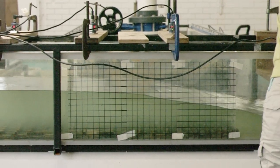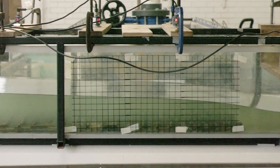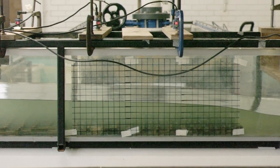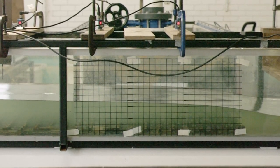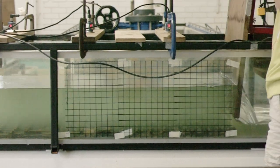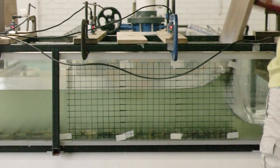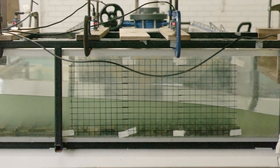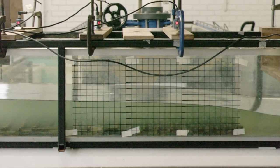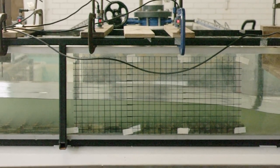This movie illustrates the generation and upstream propagation of a negative surge in a rectangular channel at the University of Queensland. At the downstream end of the flume, on the right, a gate is rapidly opened, and we can see the upstream propagation of the negative surge.